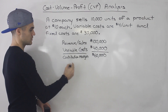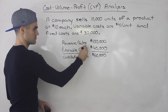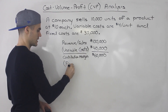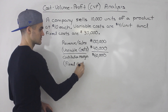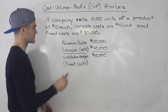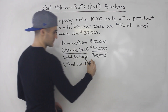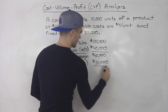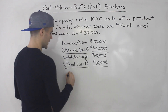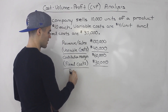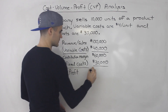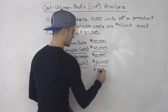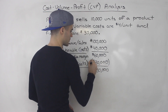Once you have your contribution margin, you can take away your fixed costs — I'll put brackets here for items we're subtracting. Our fixed costs are $30,000, and we're going to end up with a profit. In this case the profit is $30,000.